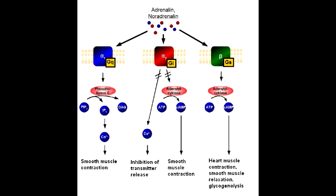The parasympathetic G-protein linked receptors that act through second messengers include muscarinic-1, muscarinic-2, and muscarinic-3. The dopamine receptors that are G-protein linked and act through second messengers include dopamine-1 and dopamine-2 receptors.